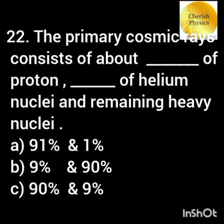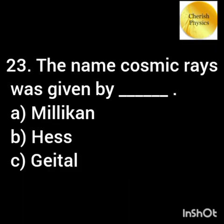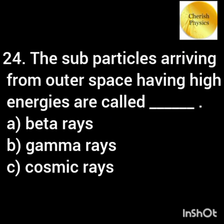The primary cosmic rays consist of about 85% protons and 12% helium nuclei, with the remaining being heavy nuclei. The name 'cosmic rays' was given by Millikan. The sub-particles arriving from outer space having high energies are called cosmic rays.